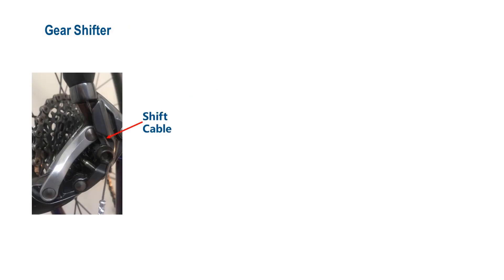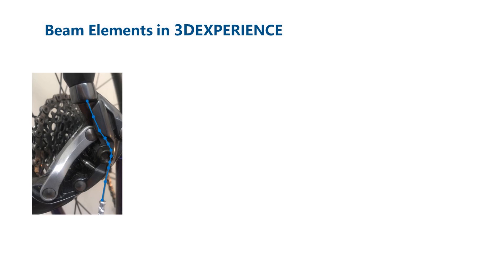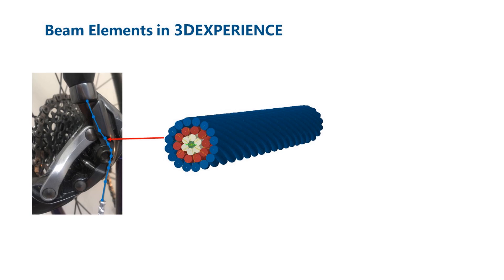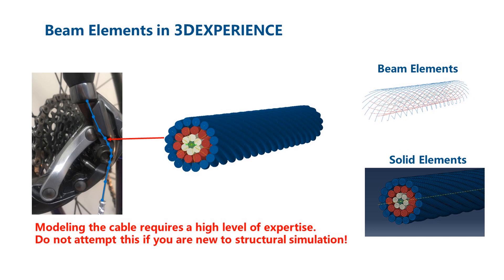The final item we will look at is the cable used to change the gears on a bicycle. The shift cable behaves like a long thin beam, so if we are designing the shifting mechanism, we might model the cable using three-dimensional beam elements. 3D experience has two-node linear beam elements and three-node quadratic beam elements. If you are new to structural simulation, use the quadratic beam element B32. It is worth pointing out that modeling the cable using beam elements was one of many choices we could have made. The shift cable is actually a bundle of other cables. If we were particularly interested in what happens to the cable, we might have modeled it in more detail — using beam elements for each individual wire, or even solid elements for each wire. Modeling the cable in detail requires a high level of expertise; do not attempt this if you are new to structural simulation. If you need to model a component like this, you should study the topics of non-linear analysis and contact.